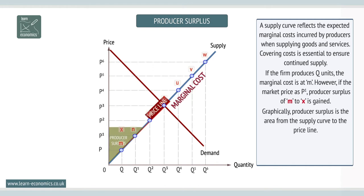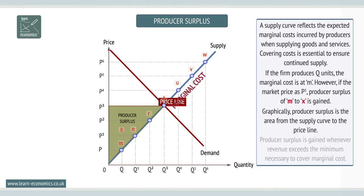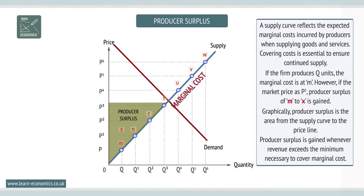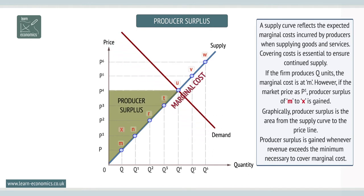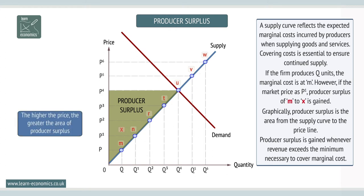Graphically, producer surplus is the area from the supply curve to the price line. Producer surplus is gained whenever revenue exceeds the minimum necessary to cover marginal cost. The higher the price, the greater the area of producer surplus.